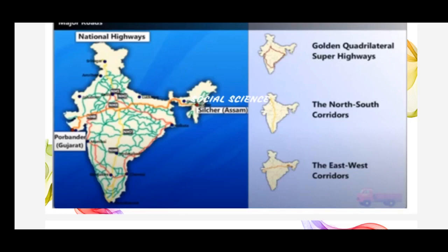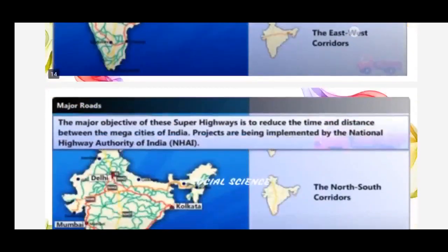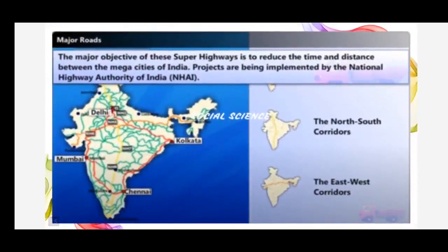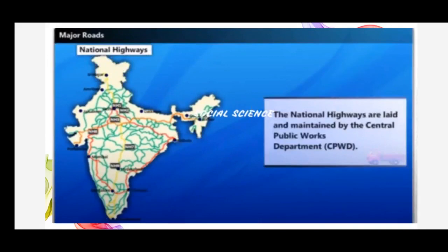The major objective of these superhighways is to reduce the time and distance between the mega cities of India. These highways are implemented by the National Highway Authority of India, that is NHAI. National highways link the extreme parts of the country and are laid and maintained by the Central Public Works Department, or CPWD. A number of major national highways run in the north-south and east-west directions.